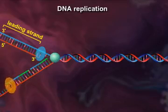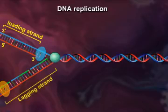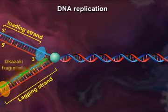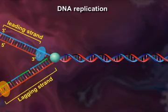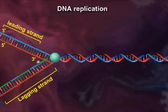Replication in this strand is discontinuous, and thus it is called the lagging strand. The fragments of DNA on the lagging strand are called Okazaki fragments. Once the polymerase completes an Okazaki fragment, it dissociates from the template strand, and these fragments are then joined by the enzyme DNA ligase.